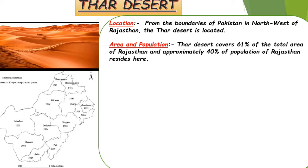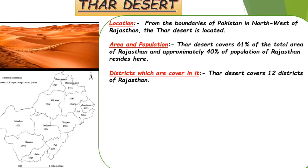The Thar Desert covers 61% of Rajasthan's area, and 40% of the total population lives here. Regarding districts, the Thar Desert covers 12 districts of Rajasthan. These are: Ganganagar, Hanumangarh, Bikaner, Churu, Jhunjhunu, Nagaur, Jodhpur, Jaisalmer, Jalor, Pali, Barmer.